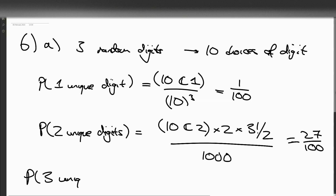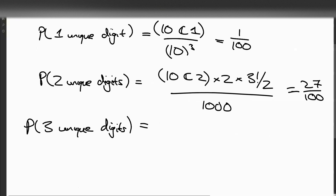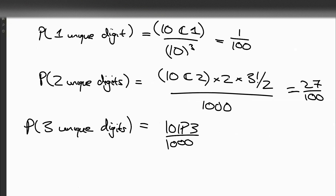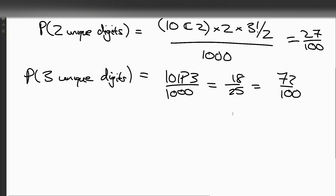Now the probability of three unique digits is going to be just the number of ways of permuting three digits from ten, so ten permutation three divided by our thousand ways of getting digits — ten P three over a thousand — gives us eighteen over twenty-five, which is seventy-two over a hundred. So you can see these add up to one, so that is all good.